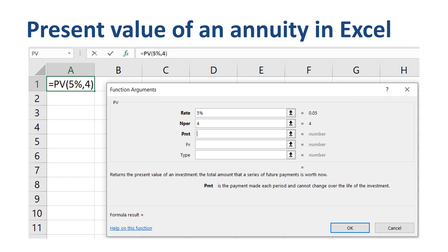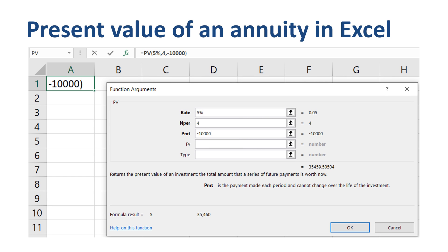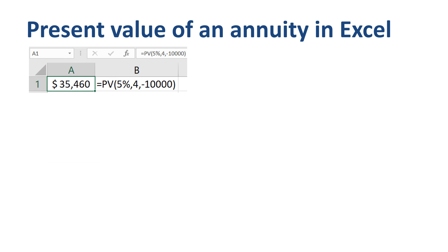Number of payment periods 4, and a payment of minus $10,000, lead to a present value of the annuity of $35,460, the same outcome as in the previous two methods.